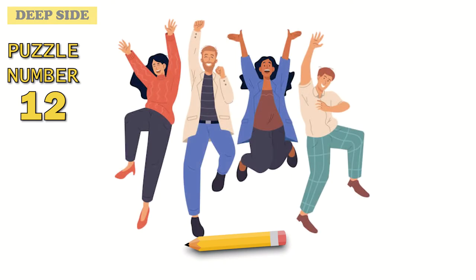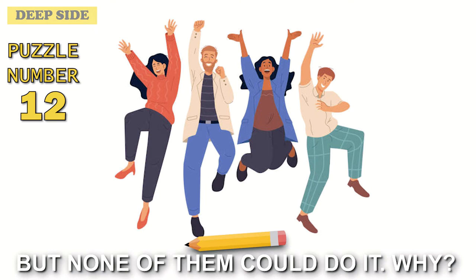Puzzle number 12. Several people were asked to jump over a pencil that was placed on the floor, but none of them could do it. Why?